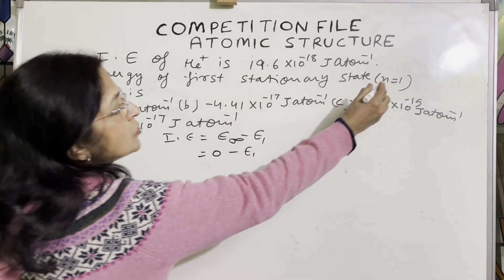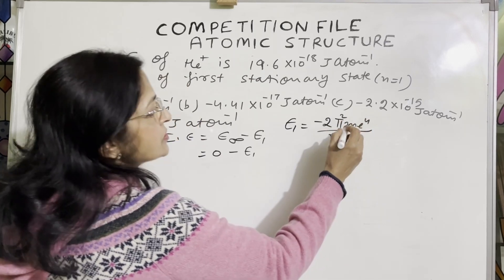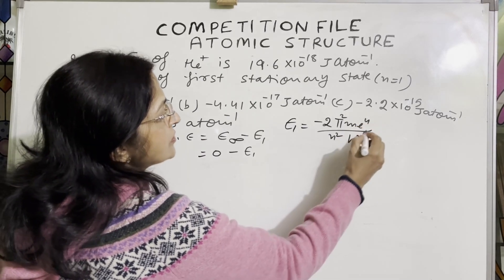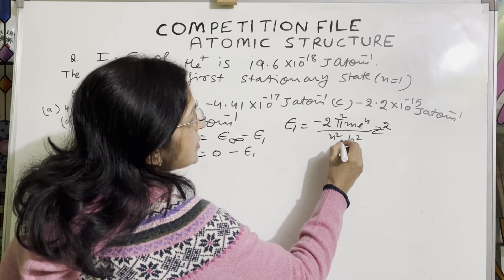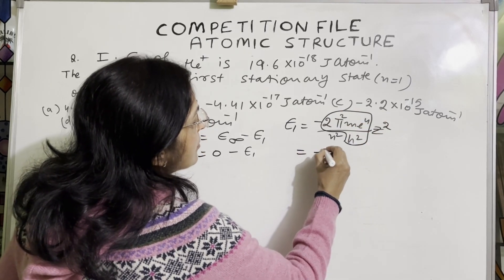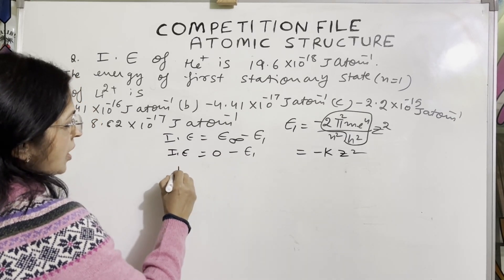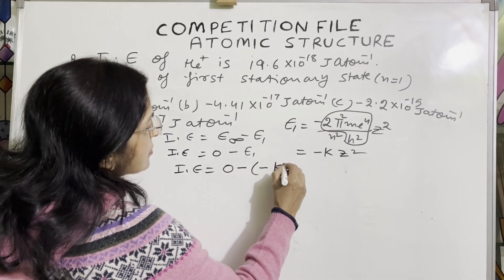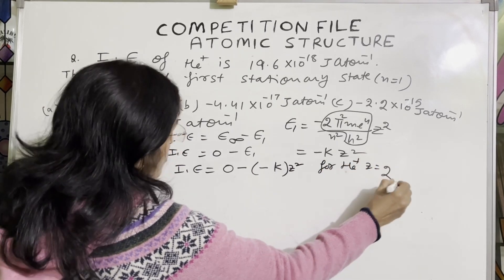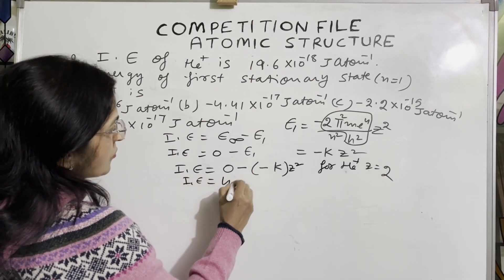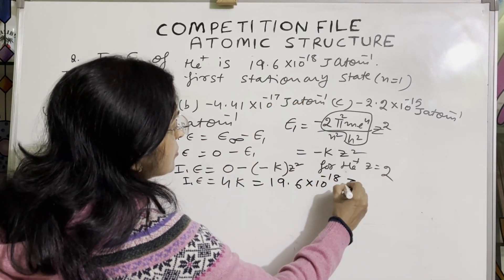So ionization energy = 0 − E₁. The energy formula is E = −2π²me⁴Z²/(n²h²), which simplifies to −KZ²/n². For helium plus, Z = 2, so ionization energy = 4K = 19.6 × 10⁻¹⁸ J/atom. Solving, K = 19.6/4 × 10⁻¹⁸ = 4.9 × 10⁻¹⁸ J/atom.